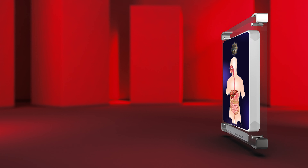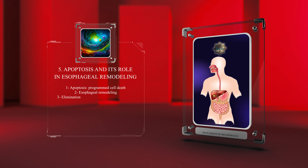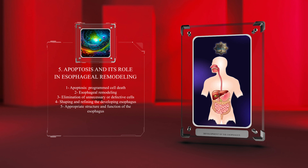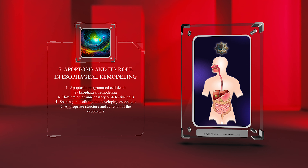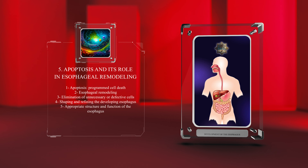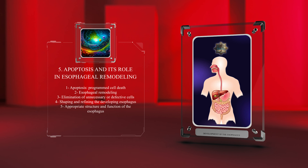Apoptosis, or programmed cell death, also plays a critical role in esophageal remodeling. Apoptotic mechanisms selectively eliminate unnecessary or defective cells, thereby shaping and refining the developing esophagus. The controlled removal of cells is crucial in establishing the appropriate structure and function of this organ.